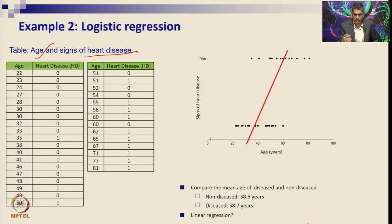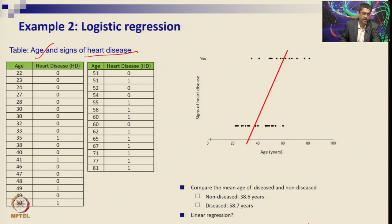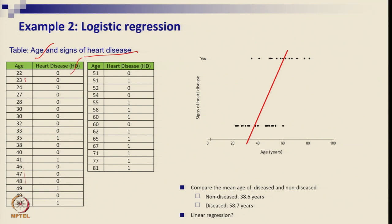In logistic regression, for accurate predictions you need around 50 to 60 or even thousands of data points, because the classifications are done into binary cases. Here, age is the only independent variable, and the heart disease cases from a report are listed alongside. For example, age 22 shows no heart disease (0), age 35 shows one case (1), and as age increases, heart disease cases increase.